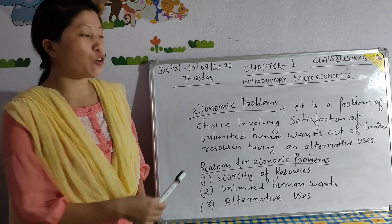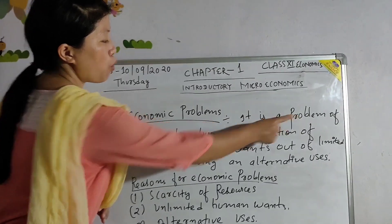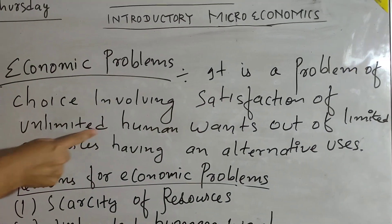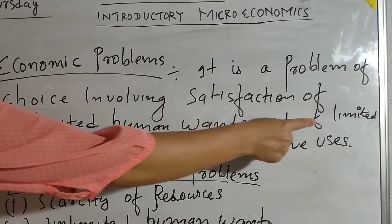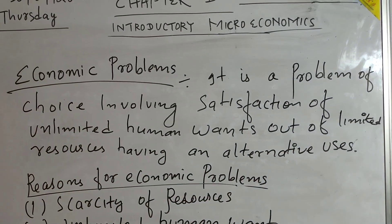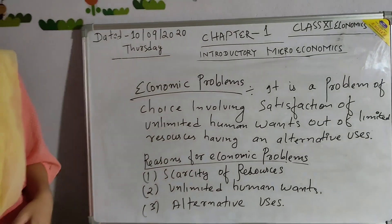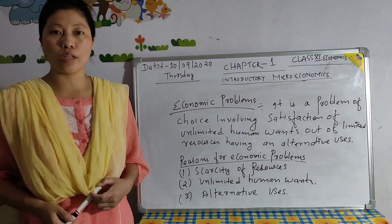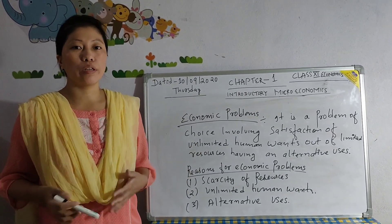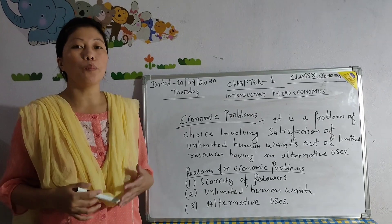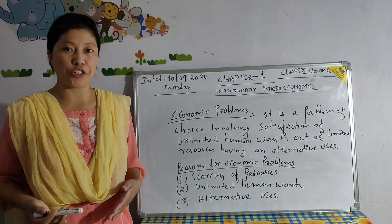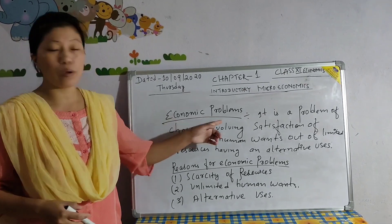Next is economic problems. It is a problem of choice involving satisfaction of unlimited human wants out of limited resources having alternative uses. Simply, you can say it is a problem of choice — how to use the available resources to meet human wants, as human wants are unlimited in nature.